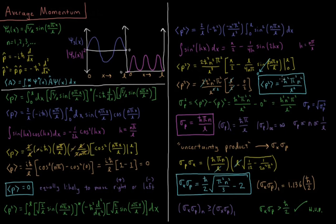You can also refactor this as h² n² over 4l². This makes sense because all energy in the particle-in-a-box is kinetic energy, and our full energy expression is this times 1 over 2 times mass. Since kinetic energy is momentum squared over 2 times mass, the average energy equals the average momentum squared over 2 times mass, consistent with the energy expressions from previous videos.